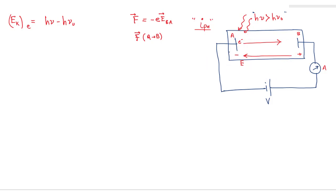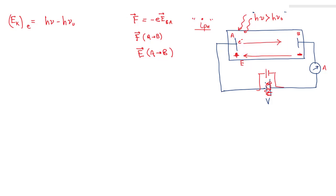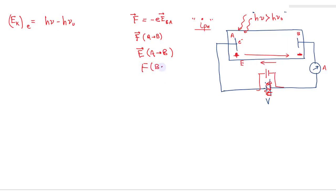Now assume the light source satisfies hν > hν₀. If I reverse the polarity of the battery, instead of taking the electron from A to B, the electric field is now directed from A to B because the polarity has changed — A becomes positive and B becomes negative. In this case, the force on the electron acts from B to A.